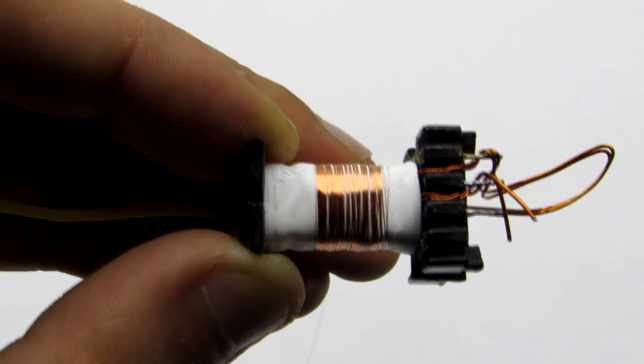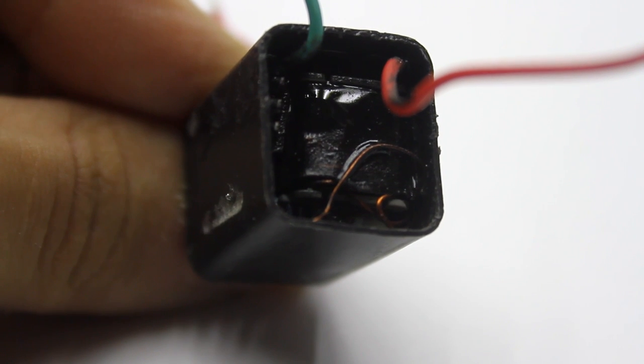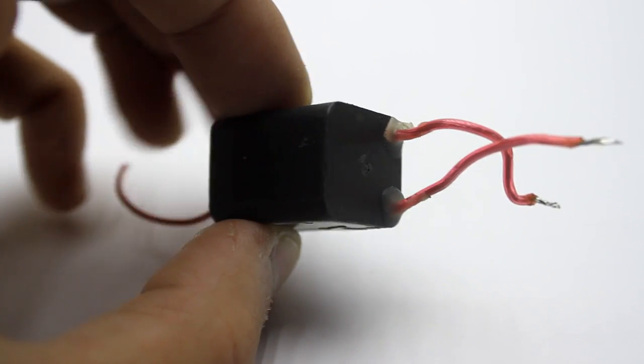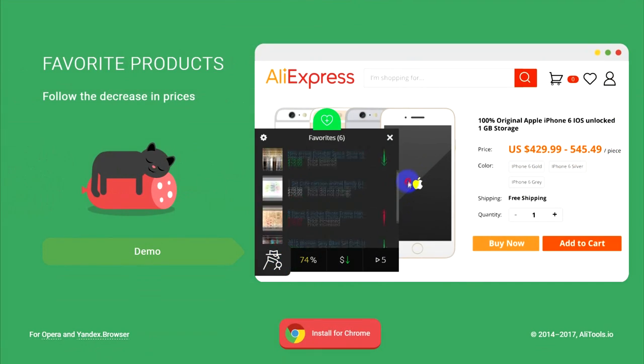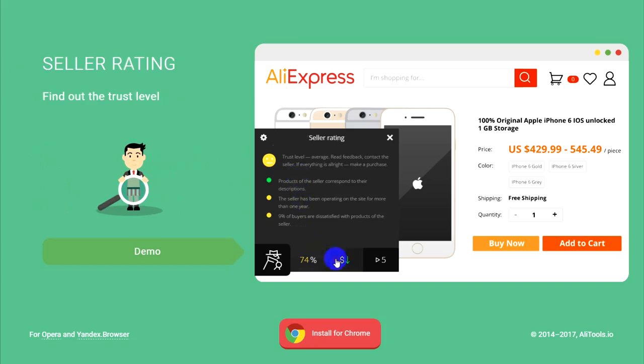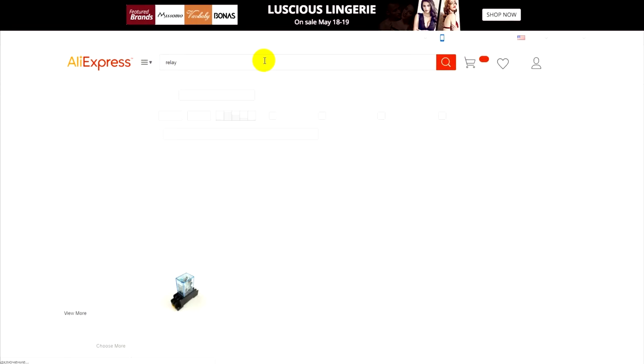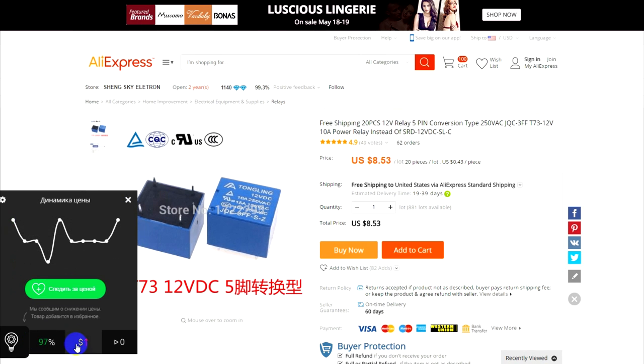But not everyone has enough patience to wind such a transformer. Therefore, I advise you to give preference to ready-made models. Many parts of this project are bought from online stores. And using the browser extension of AliTools, you can find the most profitable product at the best price. You can also study dynamics of price changes for this product and quickly assess the seller's rating. AliTools, your reliable assistant. The link is in the description under the video.